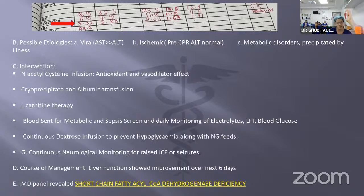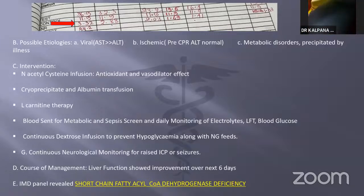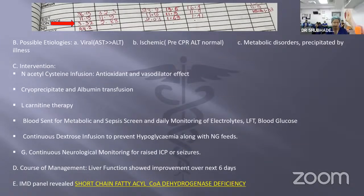Interventions taken: we started N-acetylcysteine infusion for its antioxidant and vasodilator effect. Cryoprecipitate and albumin transfusion were given. L-carnitine therapy was started. Blood was sent for metabolic and sepsis screen. Serial LFT and blood glucose monitoring was done daily. Continuous dextrose infusion with NG feeds was given for hypoglycemia. Neurological monitoring for raised ICP and seizures was ongoing.